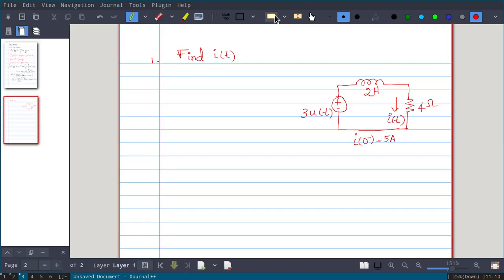In this video, we will solve one problem that is find i(t) in the below circuit. You have one voltage source, its value is 3u(t) and 2 henry inductance, 4 ohm resistor and initial current is already given that is i(0-) is 5 ampere and i(t) is the current passing through this resistance.